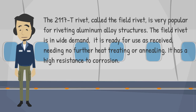The 2117-T rivet, called the field rivet, is very popular for riveting aluminum alloy structures. The field rivet is in wide demand. It is ready for use as received, needing no further heat treating or annealing, and it has a high resistance to corrosion.